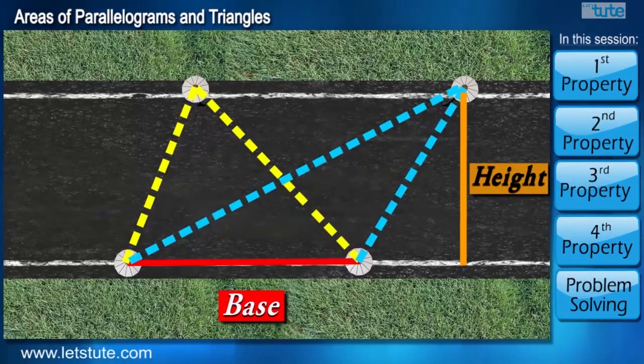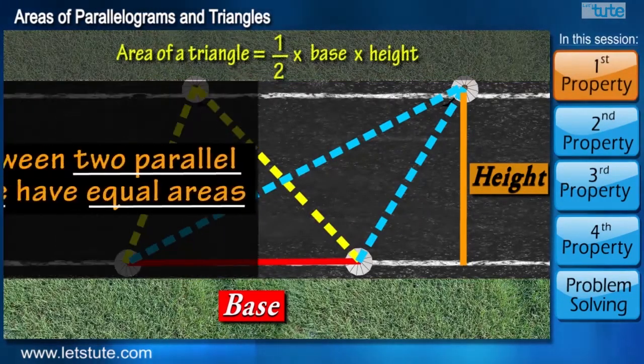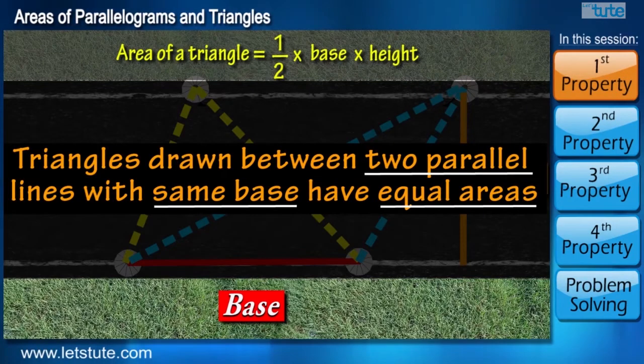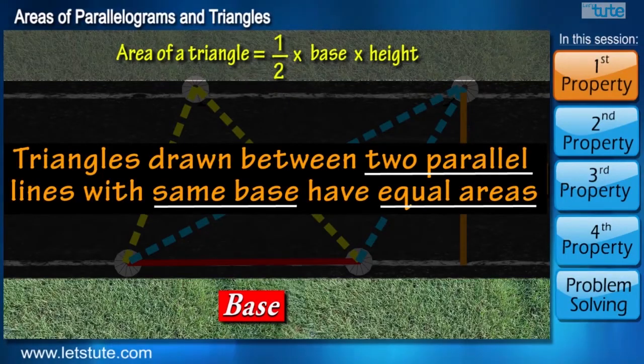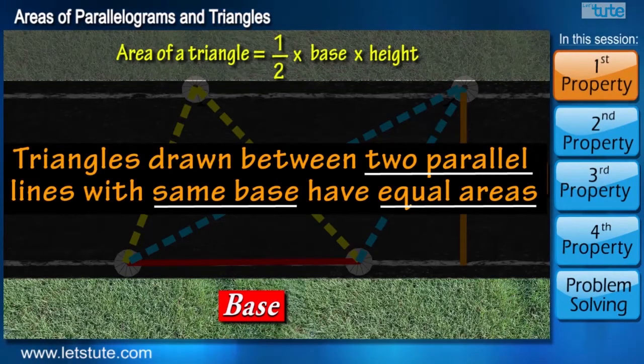So from this we can conclude, when two triangles are drawn between the same parallel lines and having the same base, their areas are also going to be equal.